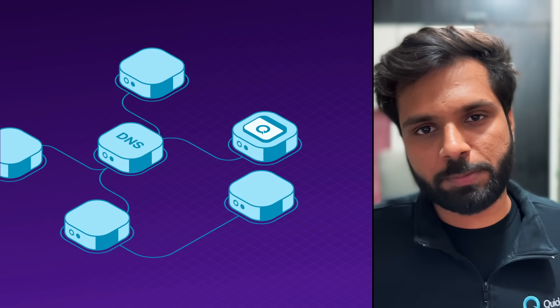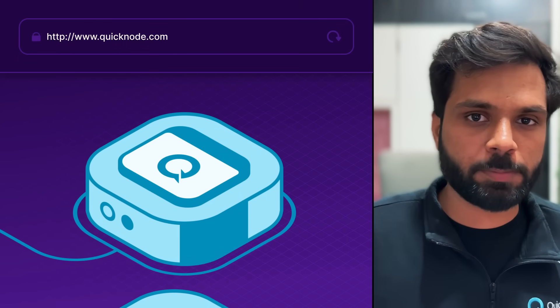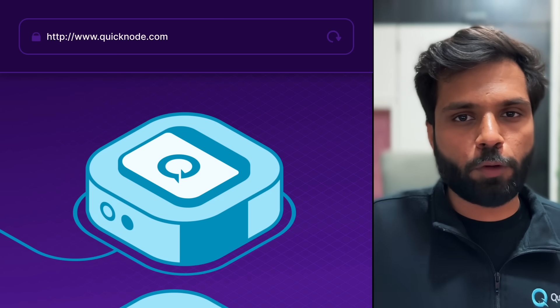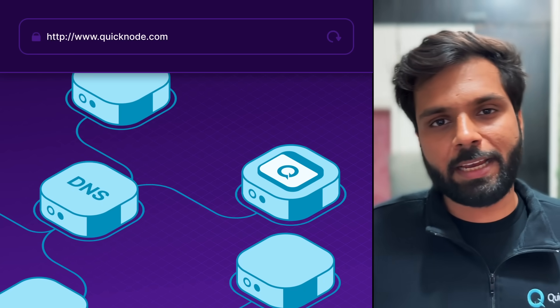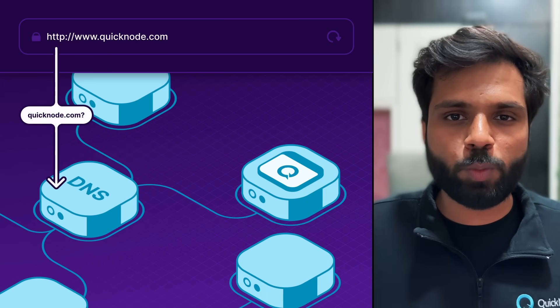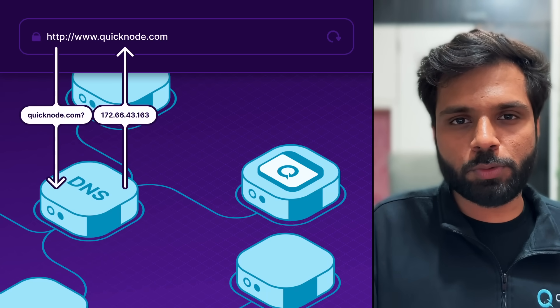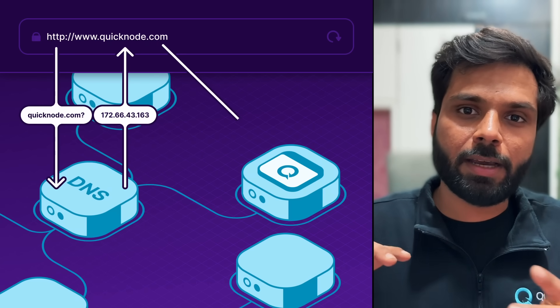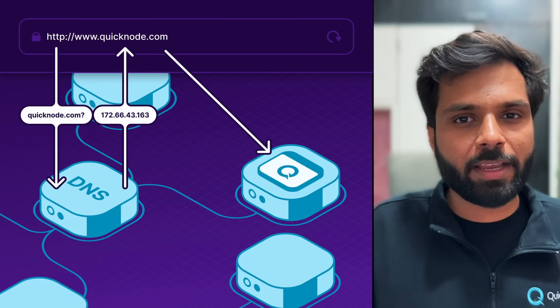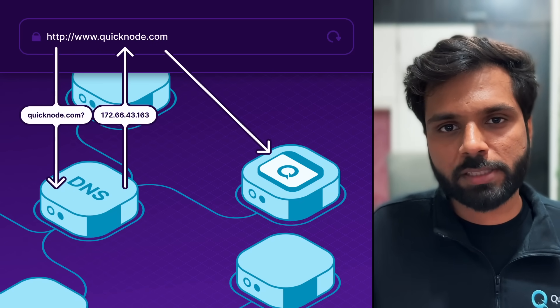Before we do that, let's first understand how ENS is different from or similar to DNS. Whenever we want to access a website, we access it using its domain — for example, quicknode.com. In the backend, the domain gets translated to an IP address, and using that IP address the resources of the website are located. Under the hood, your browser sends a request to a DNS server so that the server can get the IP address associated with the domain name, and then the browser sends an HTTP request to the actual server where the website's resources are located.